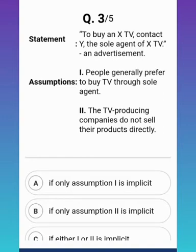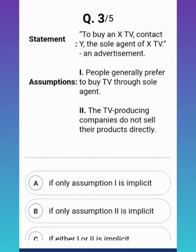The correct answer is assumption one only. If people didn't prefer to buy a TV through a sole agent, why would a company choose to advertise this way? People's preference aligns with the advertisement. Assumption two — that TV producing companies do not sell directly — is not stated anywhere in the statement. It is a far-fetched assumption. Don't go beyond the statement; just restrict yourself to what is stated.